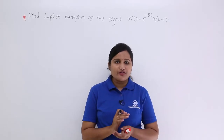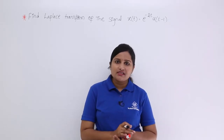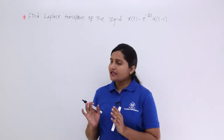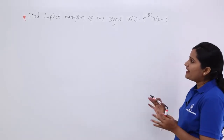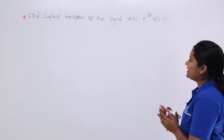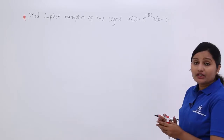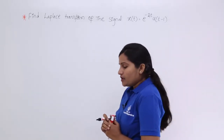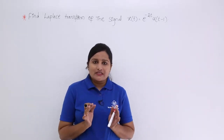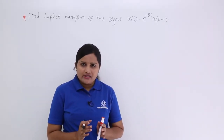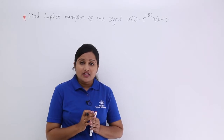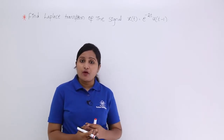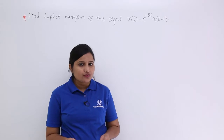In this video we are going to discuss the Laplace transform of a special shifted signal. The problem is: find the Laplace transform of x(t) = e^(-2t) · u(t-1). After observing this problem in exams like GATE, initially you are going to feel very happy that we know the formula of e^(-at) · u(t).